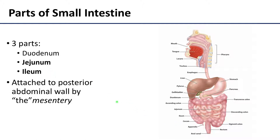The jejunum and the ileum are attached to the posterior body wall by the mesentery — 'the' mesentery, with emphasis, because there are various other mesenteries associated with the GI system, or folds of peritoneum in the abdomen. But this mesentery is the most substantial and prominent, hence 'the' — capital T-H-E. Between the two layers of the mesentery are the superior mesenteric vessels, a variable amount of fat, autonomic nerves, and importantly lymph nodes.